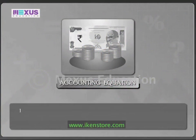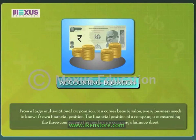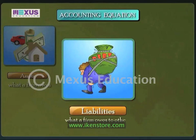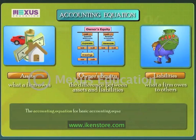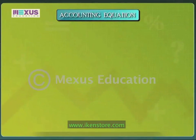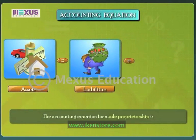Accounting Equation. From a large multinational corporation to a corner beauty salon, every business needs to know its own financial position. The financial position of a company is measured by three components that make up a company's balance sheet: Assets, Liabilities, and Owner's Equity. The accounting equation offers us a simple way to understand how these three components are related to each other. The accounting equation of a sole proprietorship is: Assets = Liabilities + Owner's Equity.